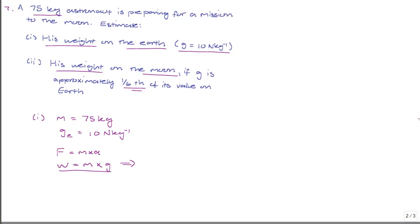So for part one, the weight on Earth of the astronaut will be equal to 75 kilograms multiplied by 10 Newtons per kilogram. This gives you a value of 750 Newtons. Notice that the kilogram and per kilogram units cancel, and you get a final answer of 750 Newtons for the weight of the astronaut on the Earth.